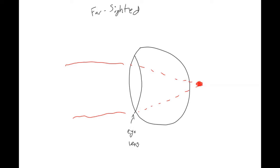And so we're going to put a convex lens in your eyeglasses. So that will focus the light a little bit before it gets to your eye, and then it'll focus in the correct spot at the back of your eye.